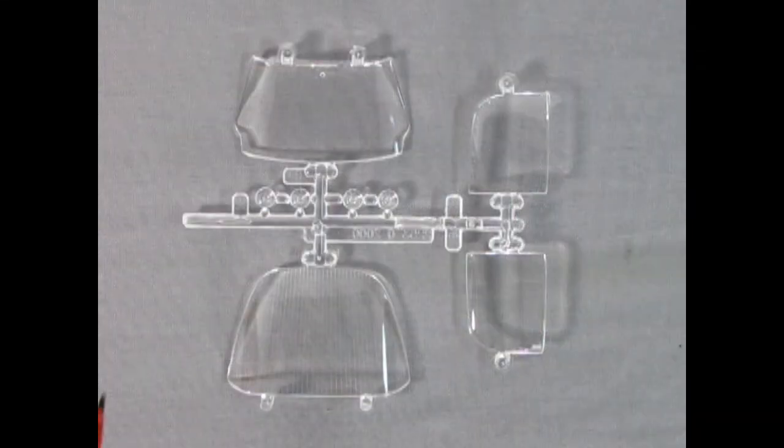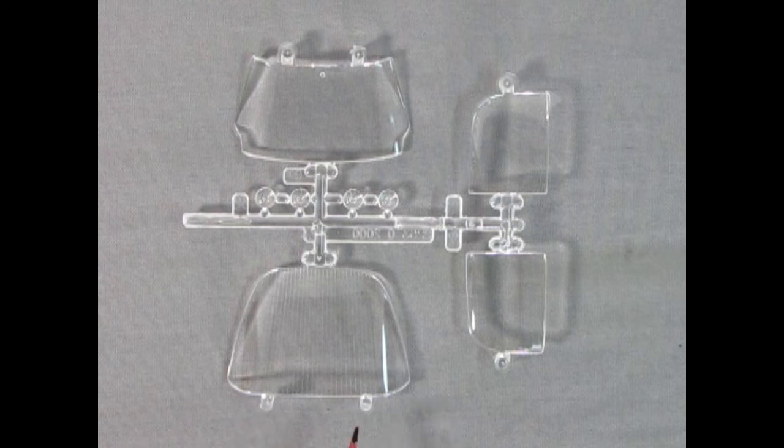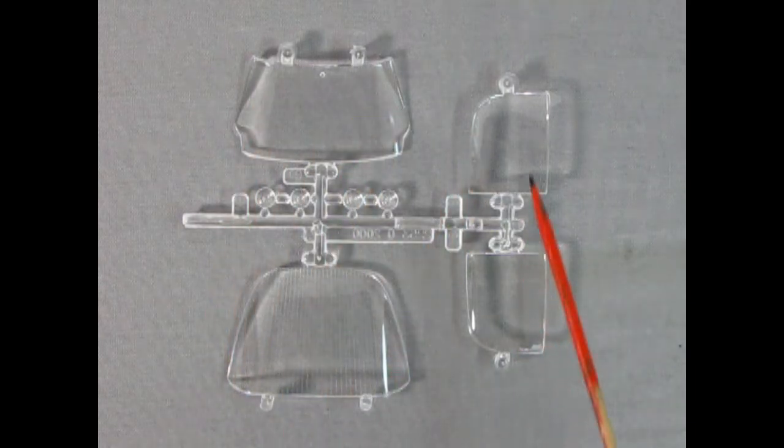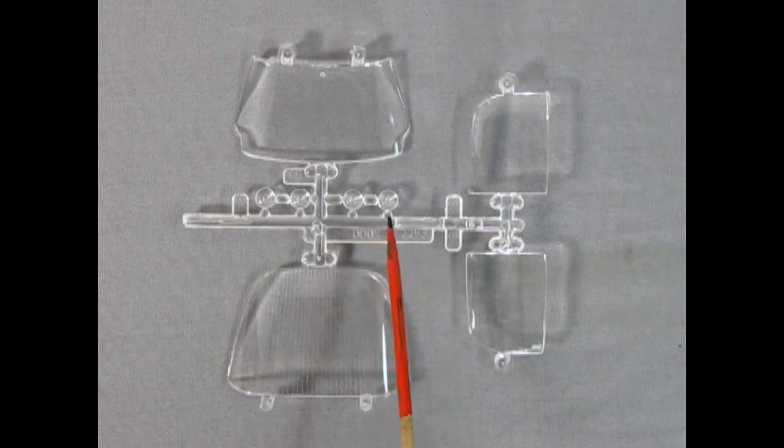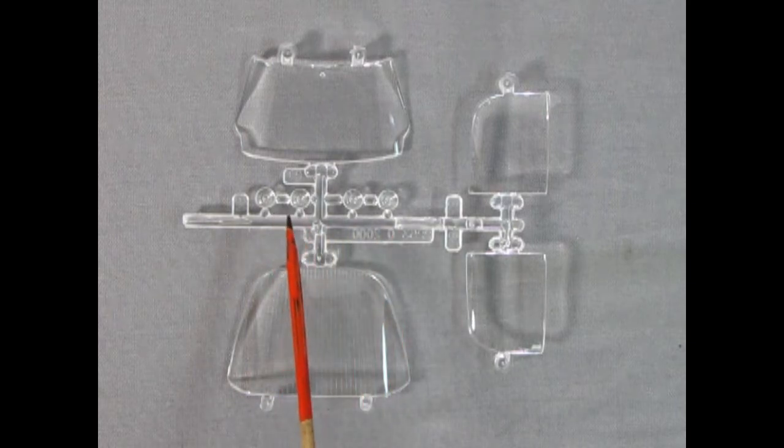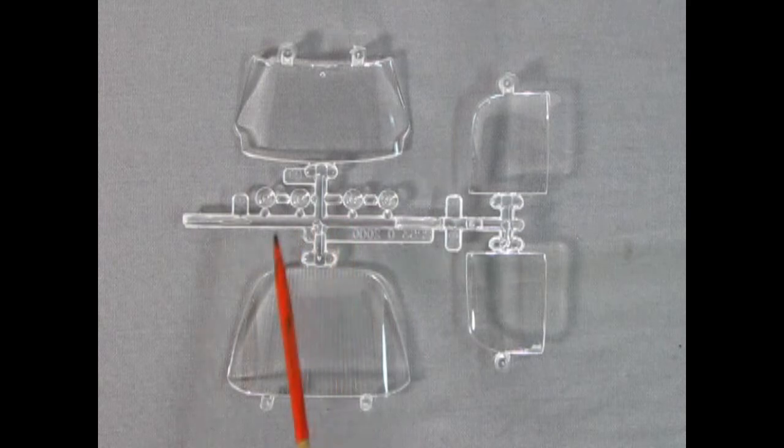The glass components on this model kit are really nice. There is our front windshield and the rear glass. You will have to remove these little bumps that are on there. And then here's our glass for the roof as well as our rear tail lamps. Unfortunately there are no red tail lamps in here so you will have to use a product like Tamiya Clear Red in order to make that all happen.